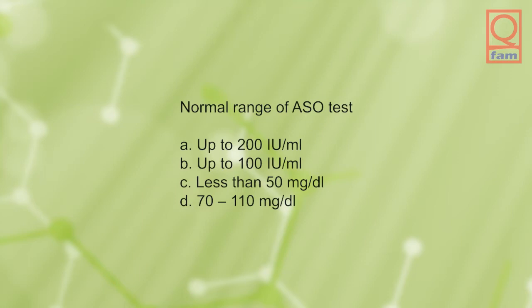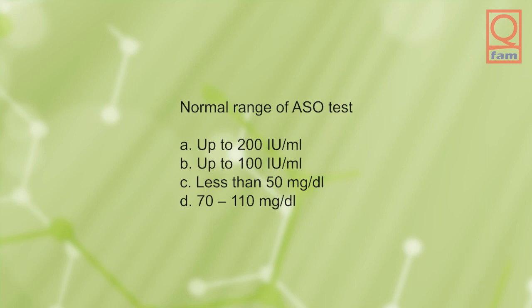Normal range of ASO test: A) up to 200 IU per milliliter, B) up to 100 IU per milliliter, C) less than 50 milligrams per deciliter, D) 70 to 110 milligrams per deciliter. The answer is A, up to 200 IU per milliliter.